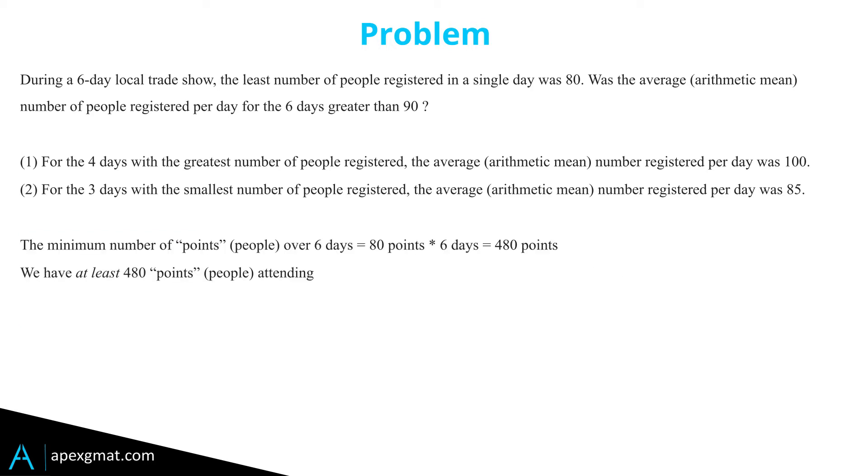We know that all of our days at a minimum are 80, which means we can build up from that piece of knowledge. We have 80 times 6 equals 480 points, and we want to know if we have more or less than 60 points above that minimum. That's what we need.